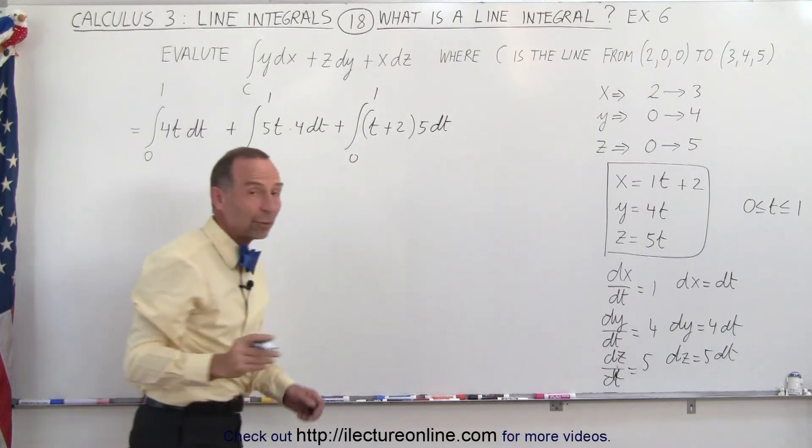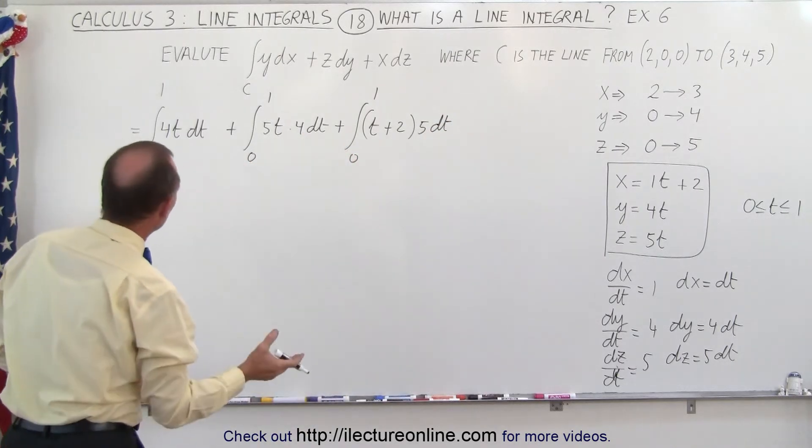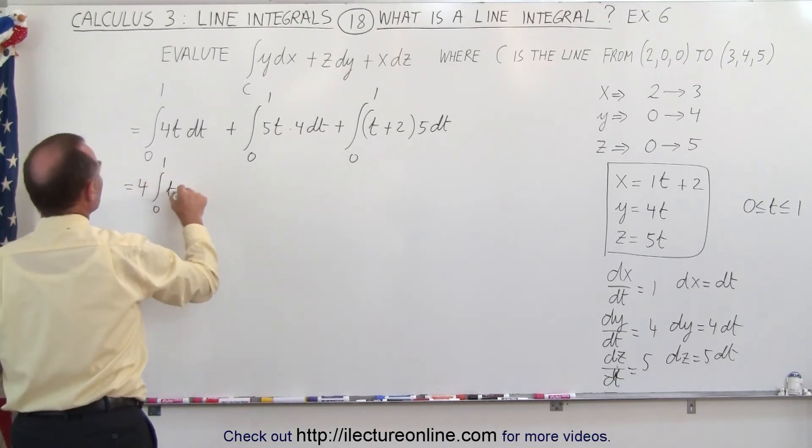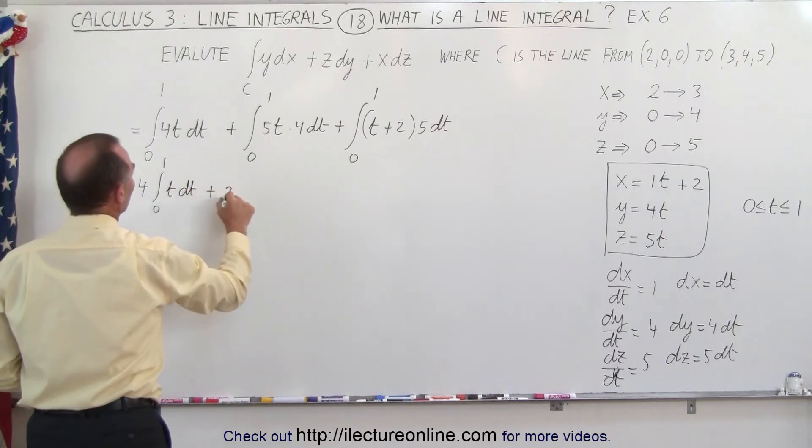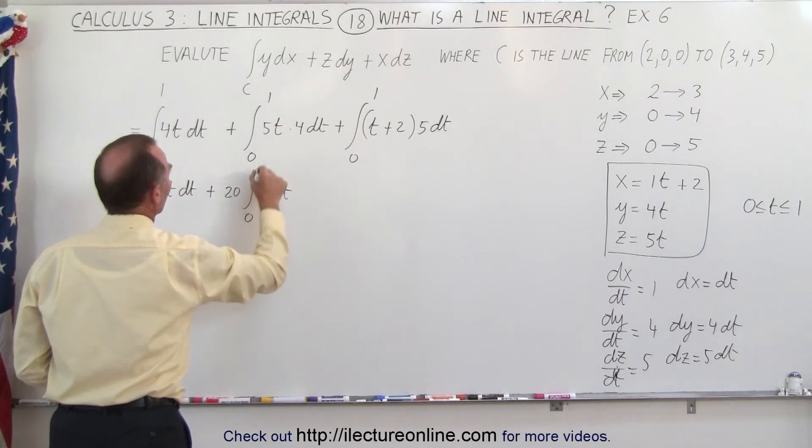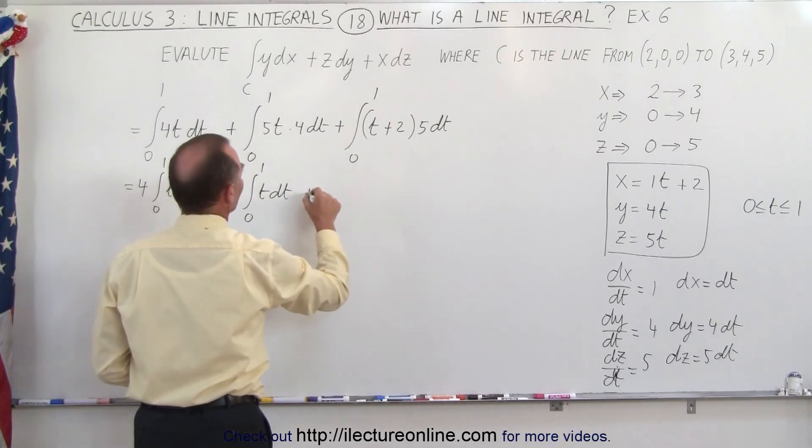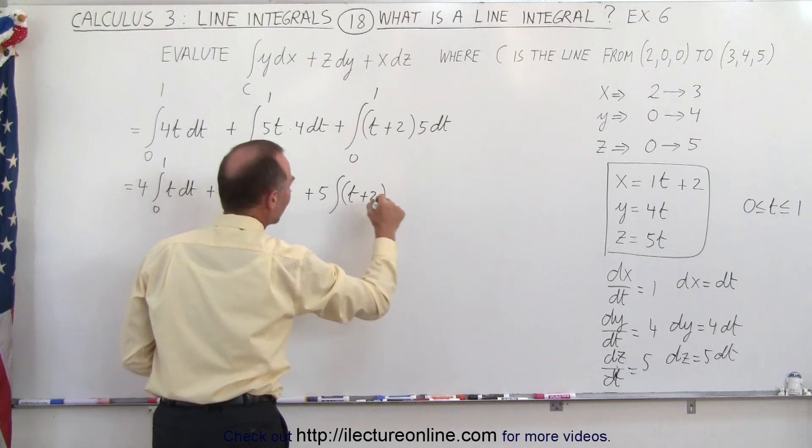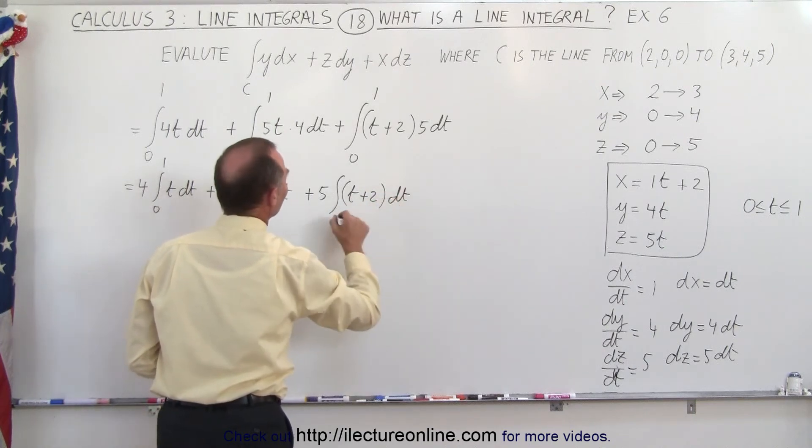And now we can go ahead and evaluate all three of these integrals. We probably want to clean them up a little bit. So this is equal to 4 times the integral from 0 to 1 of t dt, plus 20 times the integral of t dt from 0 to 1, and here plus 5 times the integral of t plus 2 dt from 0 to 1.